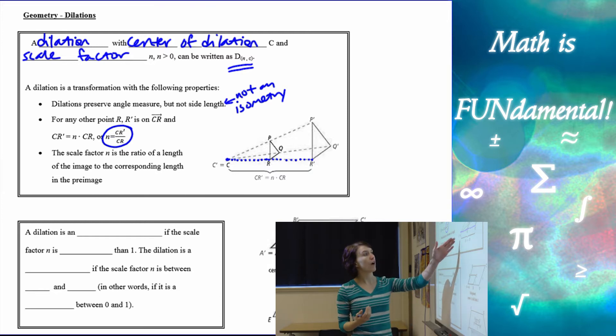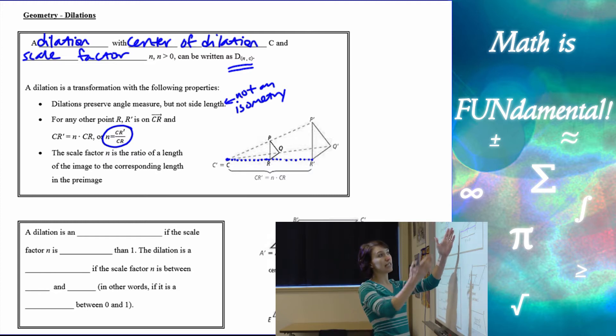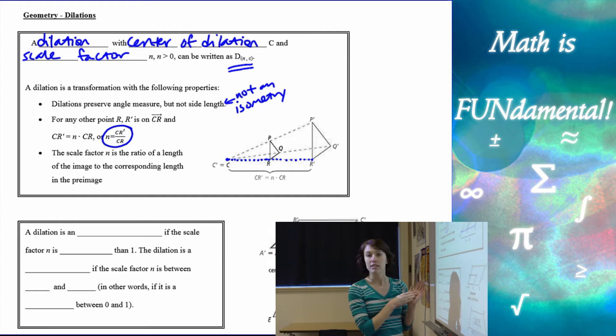Here's how I really like to think about our scale factor. We take from our center of dilation, C, and we take the distance between C and R prime and divide it by the distance between C and R.